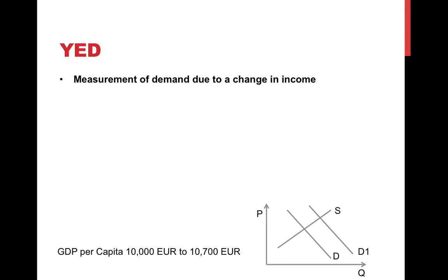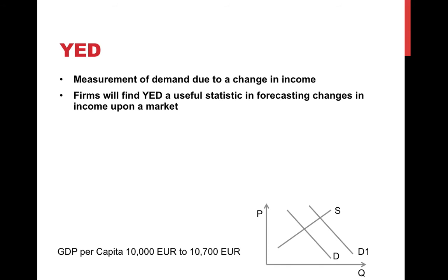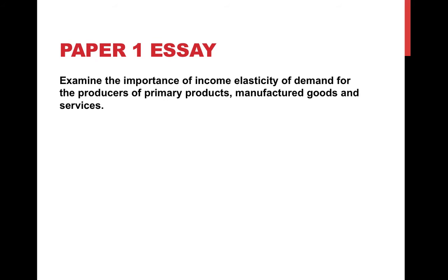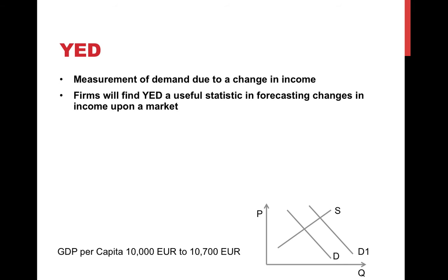Below you can see the example where GDP per capita changed from 10,000 euros a year to 10,700 euros a year. As a result of everybody being collectively richer on average, demand for certain goods and services — normal goods — will rise. To tackle that question, you would want to define YED, explain that as income rises demand for normal goods also rises, and then examine why this is important for primary products, manufactured goods, and services. Firms can forecast changes in revenue by knowing the YED of their particular good or service.